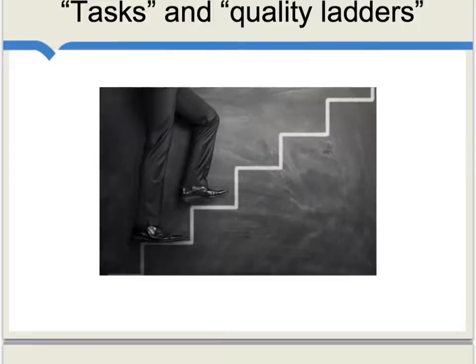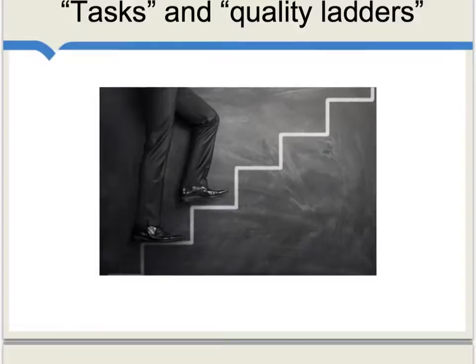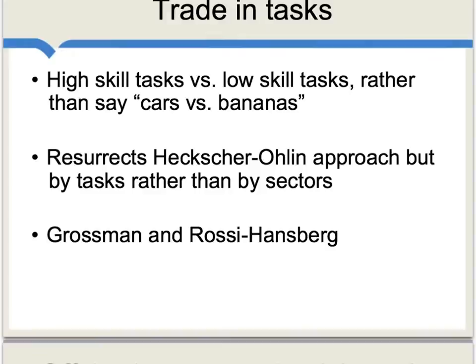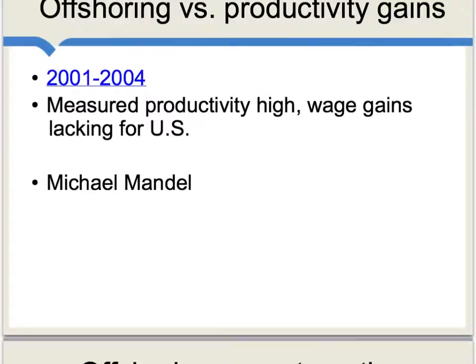Looking at offshoring this way has directed researchers' attention to what is sometimes called trade in tasks, or the idea of quality ladders. Some of the older international trade theories are defined in terms of sectors — you make cars, you sell bananas. But the new way of thinking is that trade is fundamentally in tasks. Any production process involves many different tasks, and wealthier countries tend to specialize in the more difficult tasks, meaning high rewards to skilled labor, while poorer countries tend to specialize in tasks requiring less expertise. Reconceptualizing trade as between high-skilled and low-skilled tasks allows us to partially resurrect a Heckscher-Ohlin approach, where wealthier countries have superior endowments for high-skilled tasks and poorer countries for low-skilled tasks.